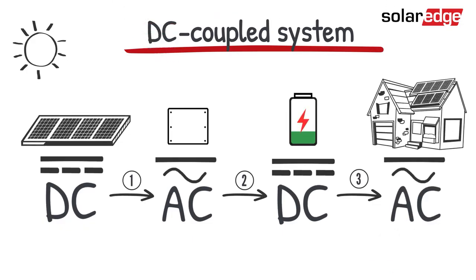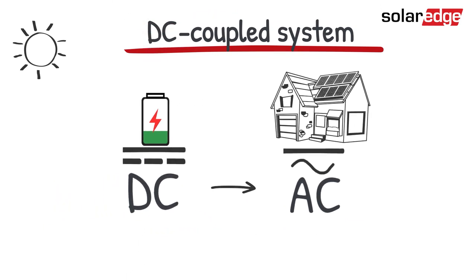But with a DC-coupled system, there is no need for this extra conversion. The energy is converted only once, making the whole process much more energy efficient.